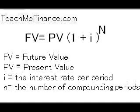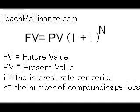A period or compounding period could be years, months, quarters, or even days, but i and N must use the same period. So if the interest rate is an annual interest rate, then N would be per year. If the interest rate is a quarterly interest rate, then N would be per quarter.